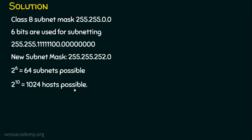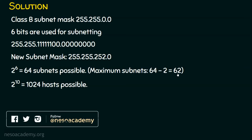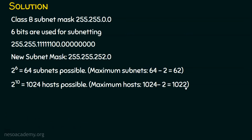But we can't use all of these. Though we get 1024 IP addresses, we can't use 1024 — 2 must be reduced from it, because the first address and the last address are not used. Likewise, in the number of subnets also, we are going to reduce 2. So the maximum subnets is 64 minus 2, which equals 62 subnets. The maximum hosts: we get 1024 hosts but reduce 2, giving 1022 hosts. As per RFC 950 specification, we need to reduce 2 from both the number of subnets possible and the number of hosts possible.